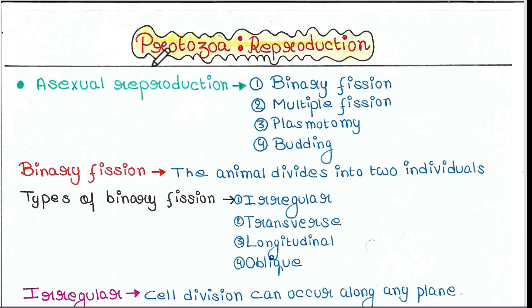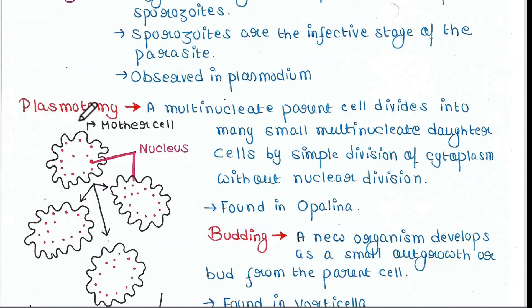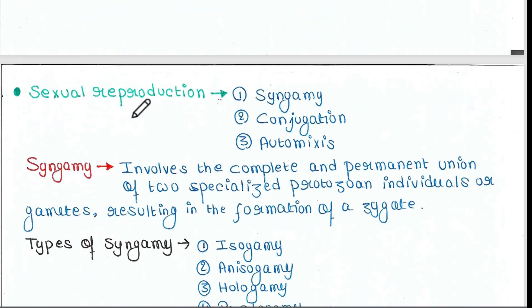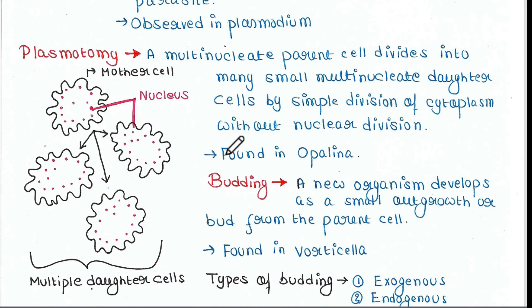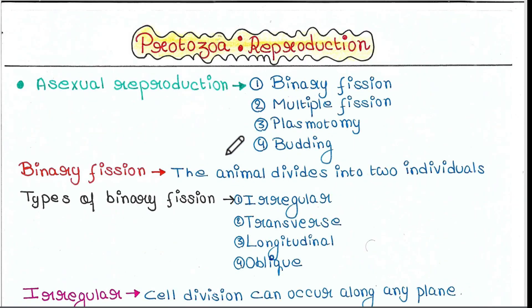Protozoans reproduce by two means: asexual reproduction and sexual reproduction. Both are observed in protozoa. Now, first we will talk about asexual reproduction.